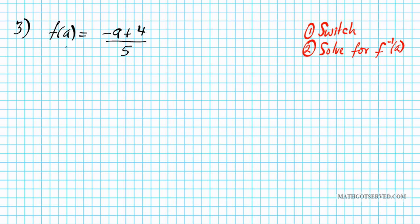Let's carry out the switch. f of a, the output, becomes a, the input; that equals negative, and a becomes the inverse of the output, f to the negative one of a, plus four divided by five. We want to get f to the negative one of a by itself, so we'll get rid of the five in the denominator, the positive four, and then the negative sign, in that order.